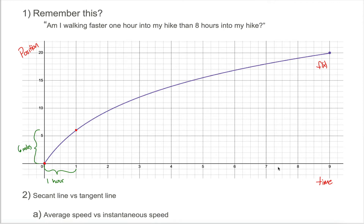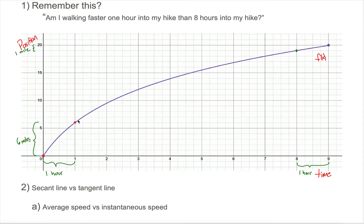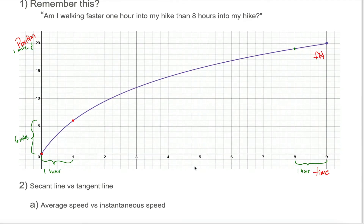Comparing that to the hour from time 8 to time 9: at time 8, I was already 19 miles into my hike, and at time 9 it looks like I'm 20 miles in. So my change in position over that hour was only 1 mile. It sure looks like I'm moving faster early on. However, this argument does not tell me I'm moving faster at one instant than another instant.